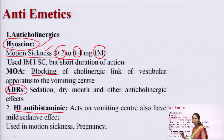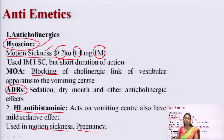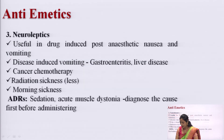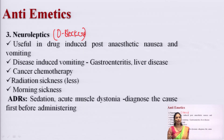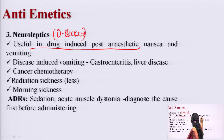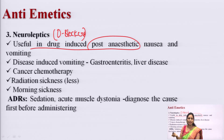H1 antihistamines act on the vomiting center and have mild sedative action. These drugs are used in motion sickness and especially in pregnant women. During the first trimester of pregnancy, many women face emesis problems — in such conditions you can give histamine antagonist drugs. Neuroleptics (dopamine blockers) are prescribed in post-anesthetic nausea and vomiting conditions.